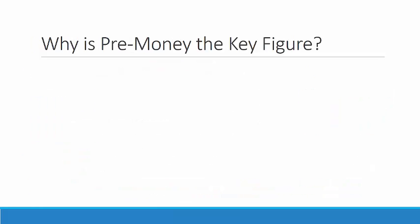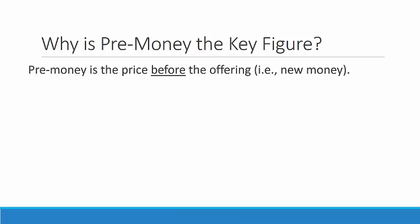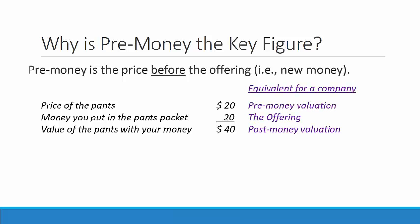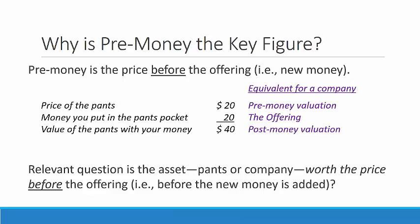Why is pre-money the key figure? Pre-money is the price before the offering, the new money. The pre-money valuation is equivalent to the price of the pants. The offering is equivalent to the money that you put in the pants pocket. And the post-money valuation is equivalent to the value of the pants with your money. So clearly, the relevant question is whether the asset — be it pants or a company — is worth the price before the offering, before the new money is added.